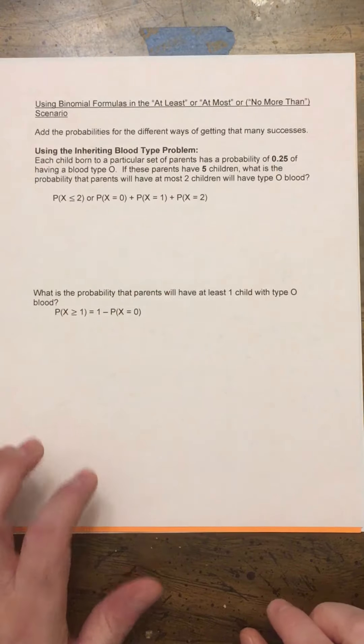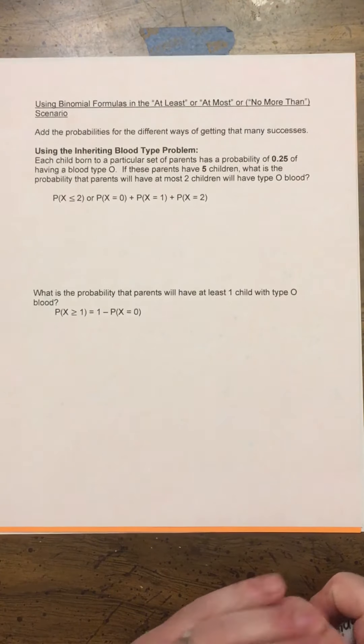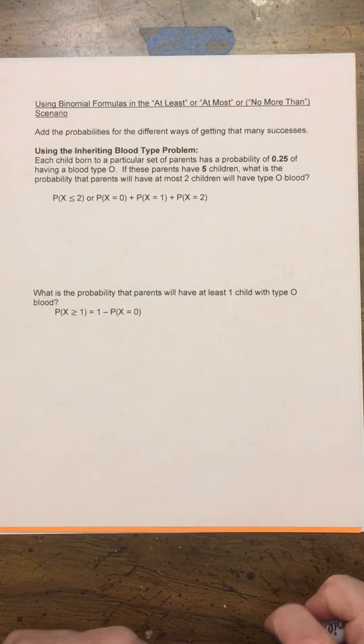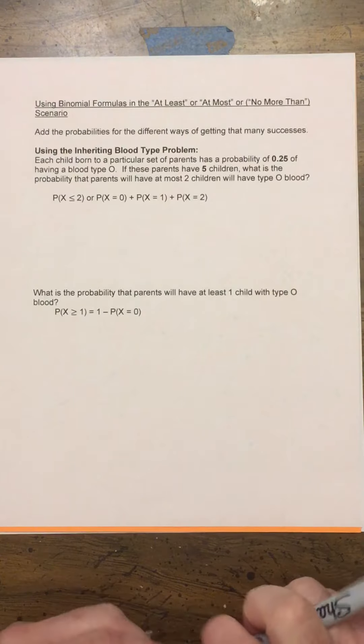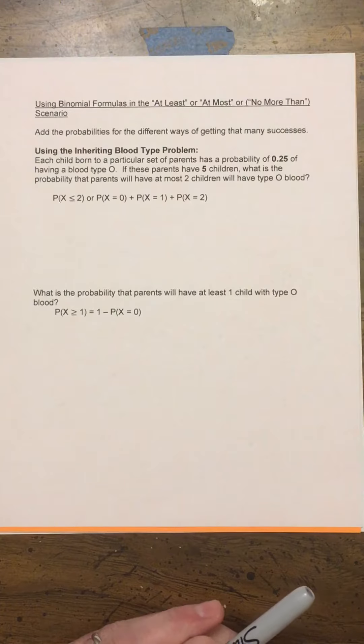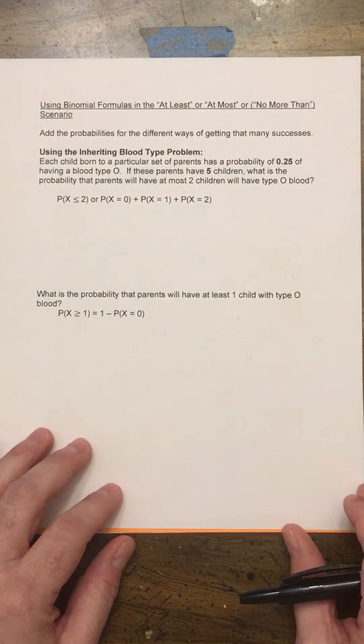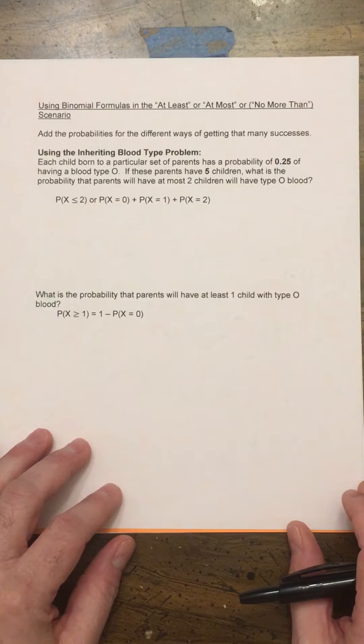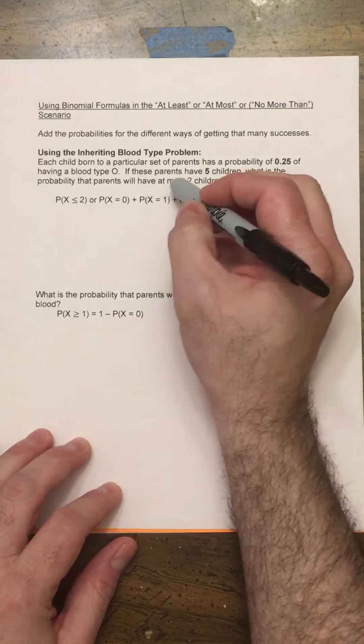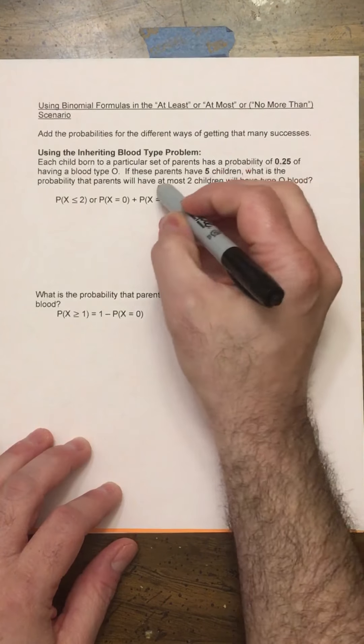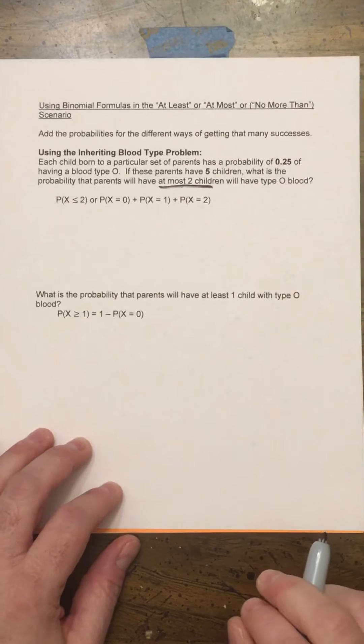For example, in a problem that we saw before using the inheriting blood type problem, it says each child born to a particular set of parents has the probability of 0.25 of having blood type O. If these parents have 5 children, what's the probability that parents will have at most 2 children? This is at most 2 children that have blood type O.